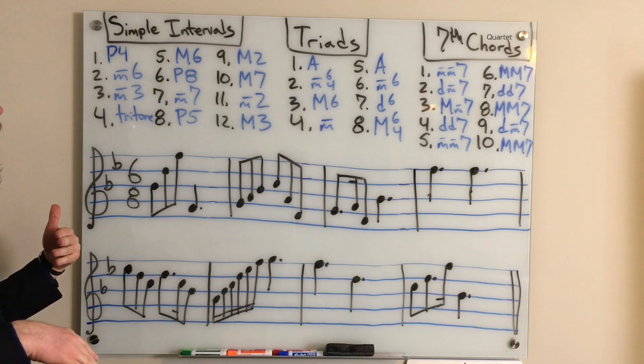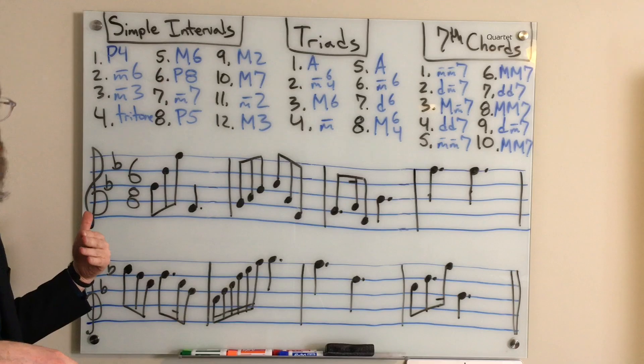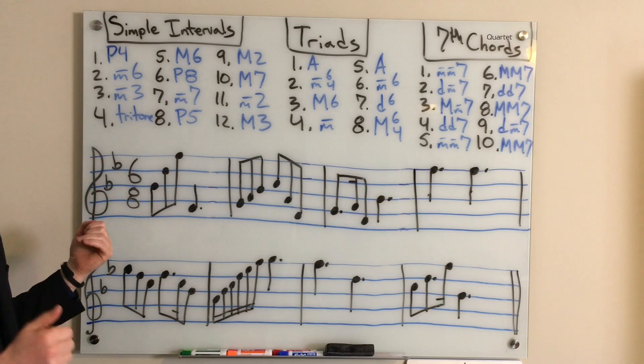Number 5 was a major 6th, descending. 6 was a perfect octave. 7 was a minor 7th. And 8 was a perfect 5th.